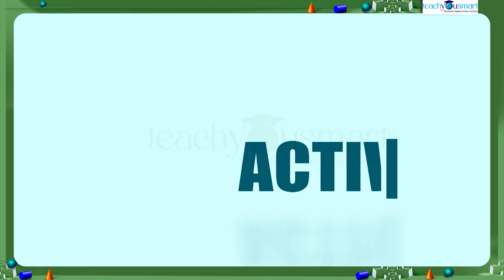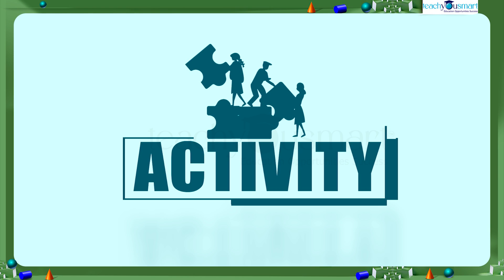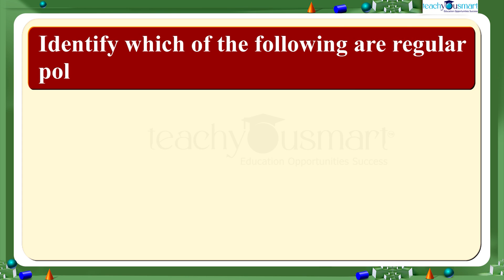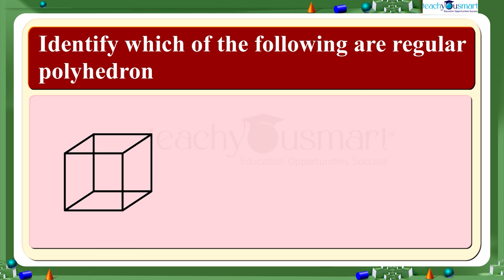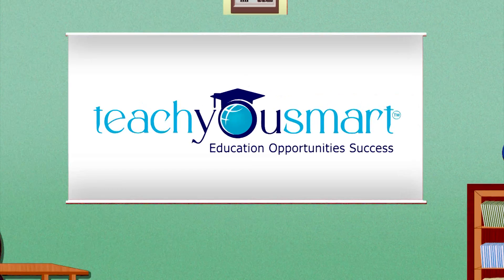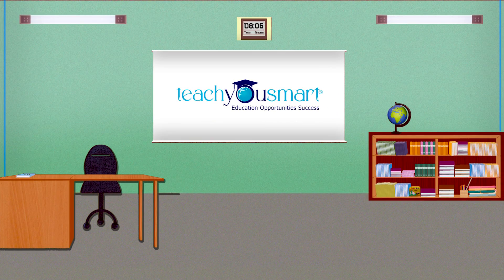Before winding up, let's check how much you understood by doing an activity. Identify which of the following are irregular polyhedrons. That's all for now — see you all in the next class with another interesting topic.